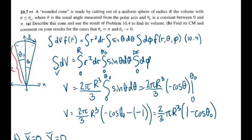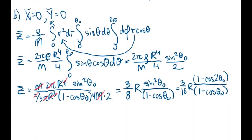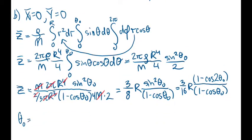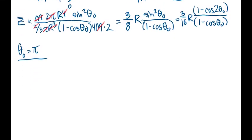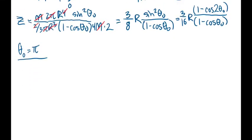Now we'll do the rest of part B. Comment on our results for the cases that theta naught equals pi and for the case that theta naught is approaching 0. If theta naught equals pi, we will have that z equals, let's use the first version.